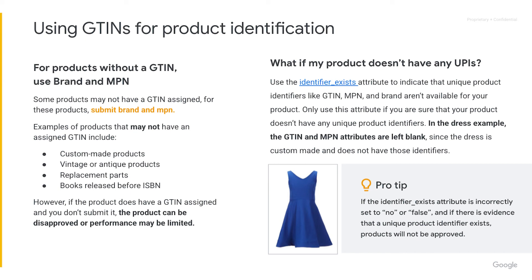However, if your product does have a GTIN assigned and you don't submit it, the product can be disapproved or the performance may be limited. What happens if my product doesn't have any product identifiers? In this case, you can leave the GTIN and MPN blank and set the identifier exists attribute to 'no' or 'false' to indicate that unique product identifiers like GTIN, MPN, and brand are not available for your product. However, only use this attribute if you are absolutely sure that your product doesn't have any unique product identifiers, because if it's incorrectly set, your products will not be approved.